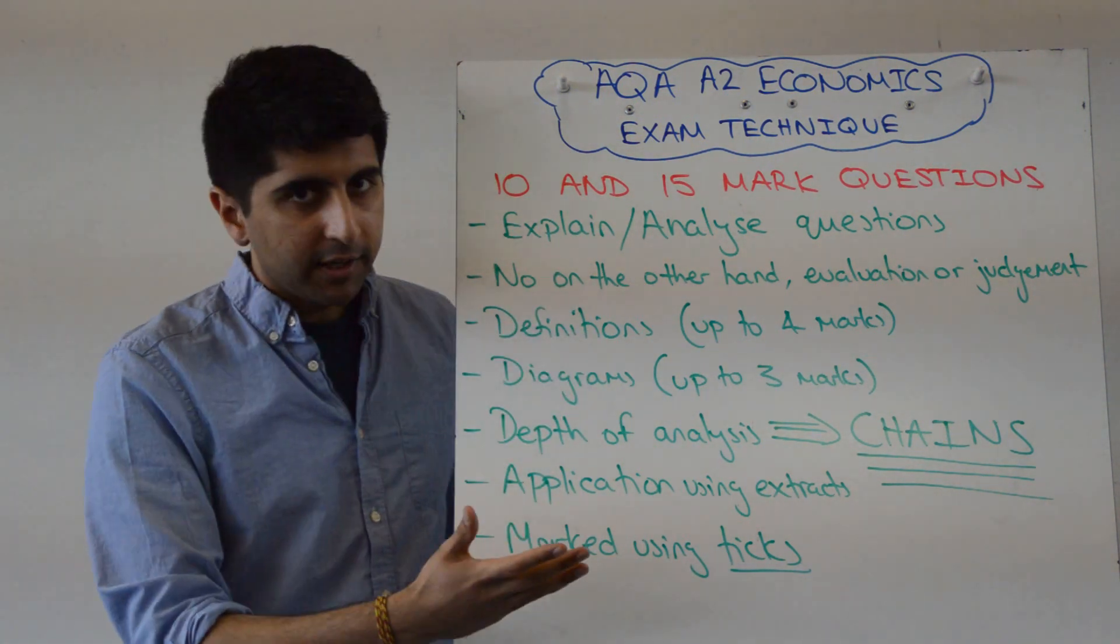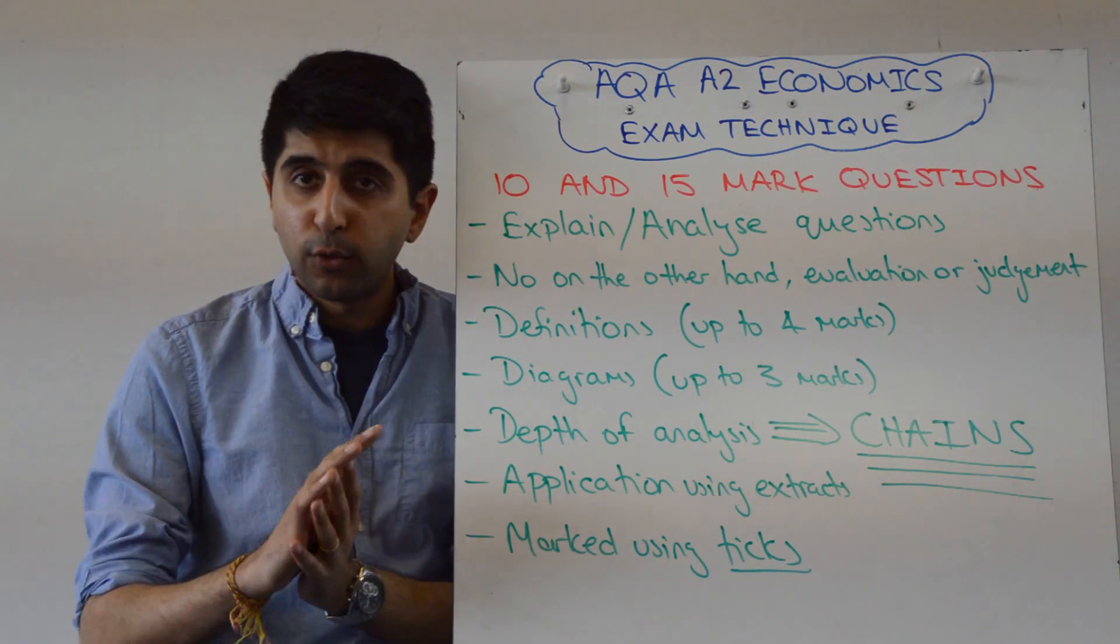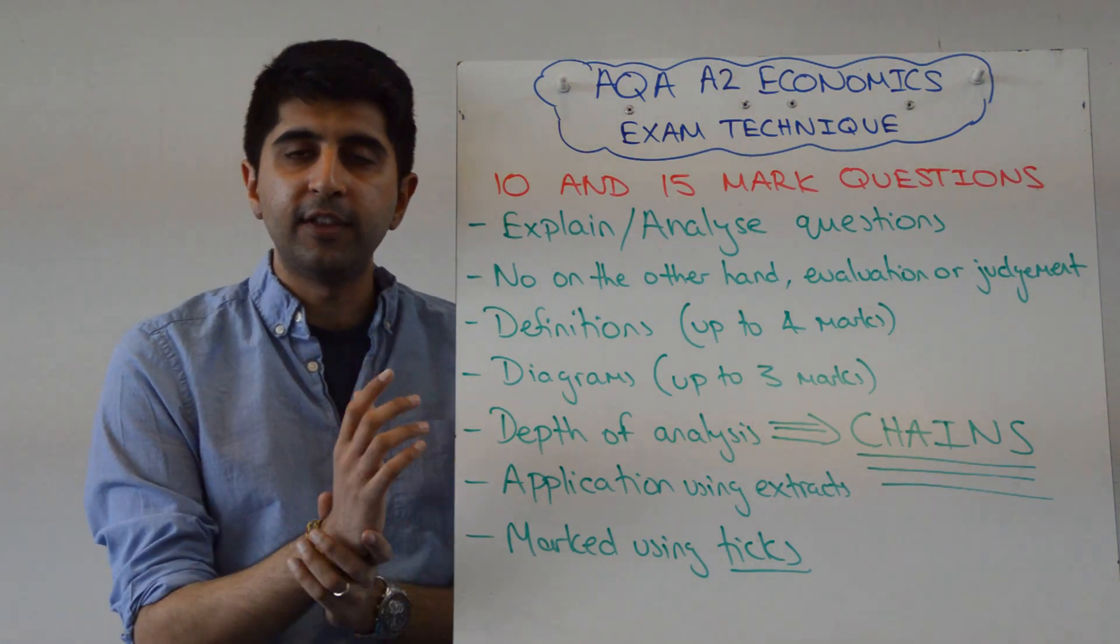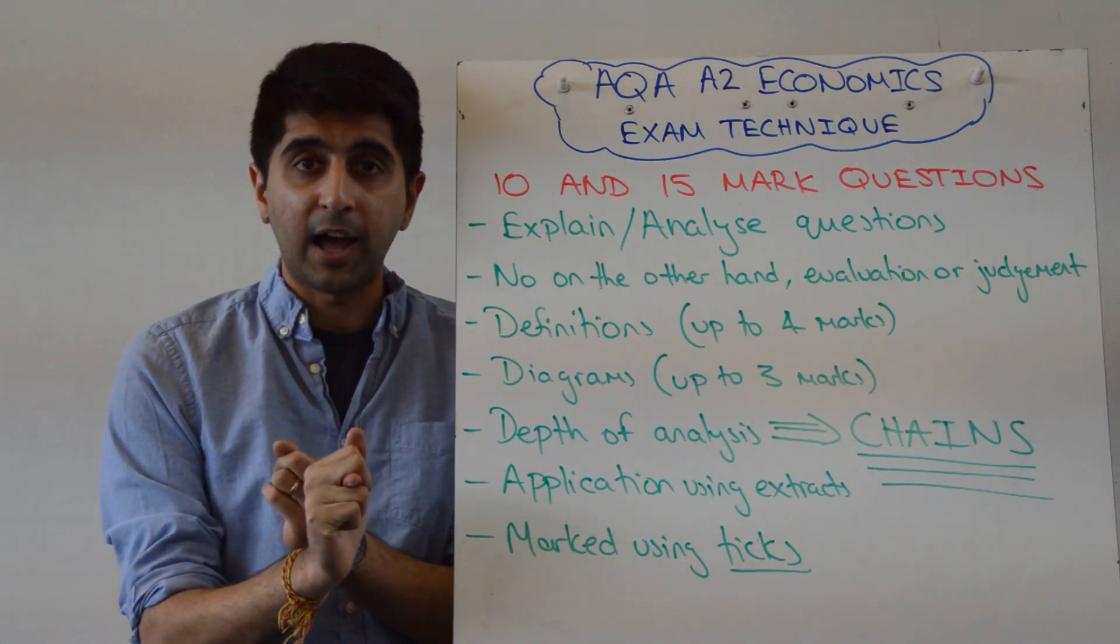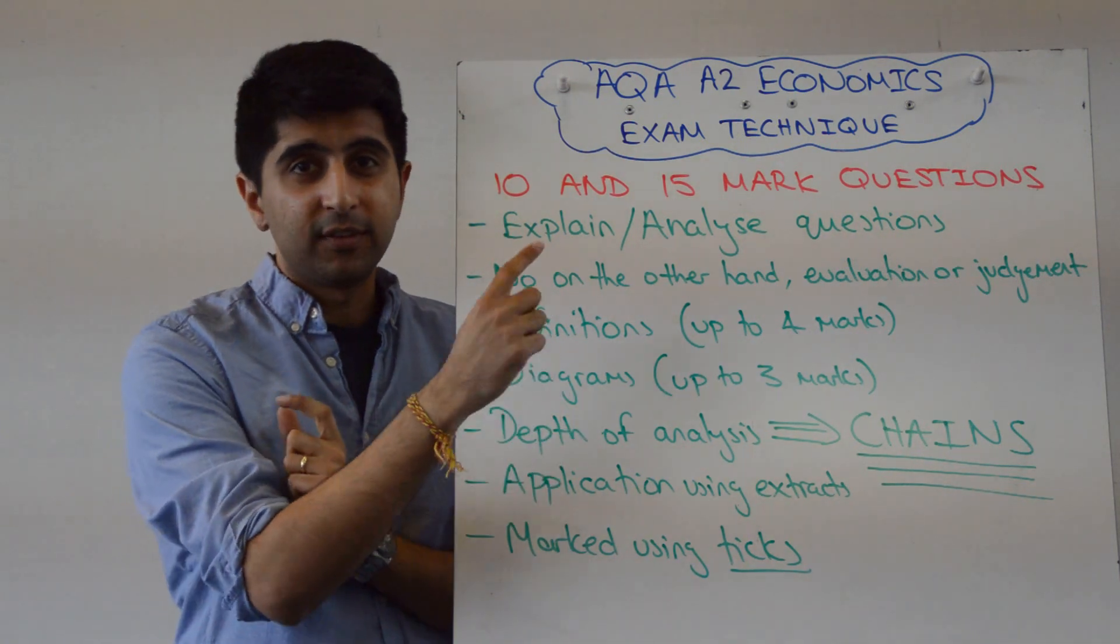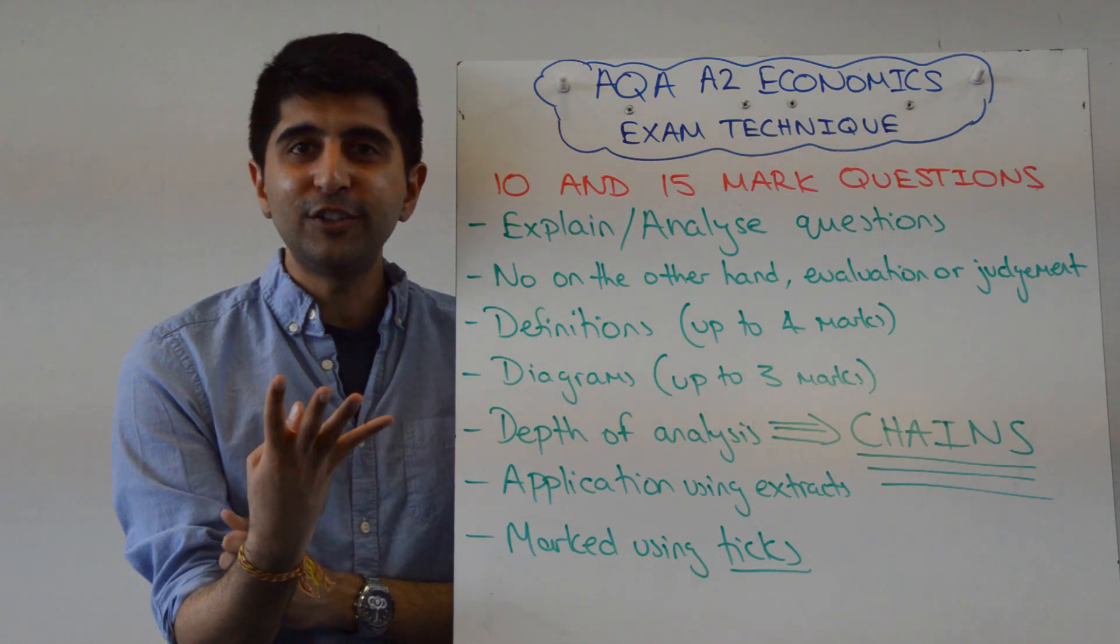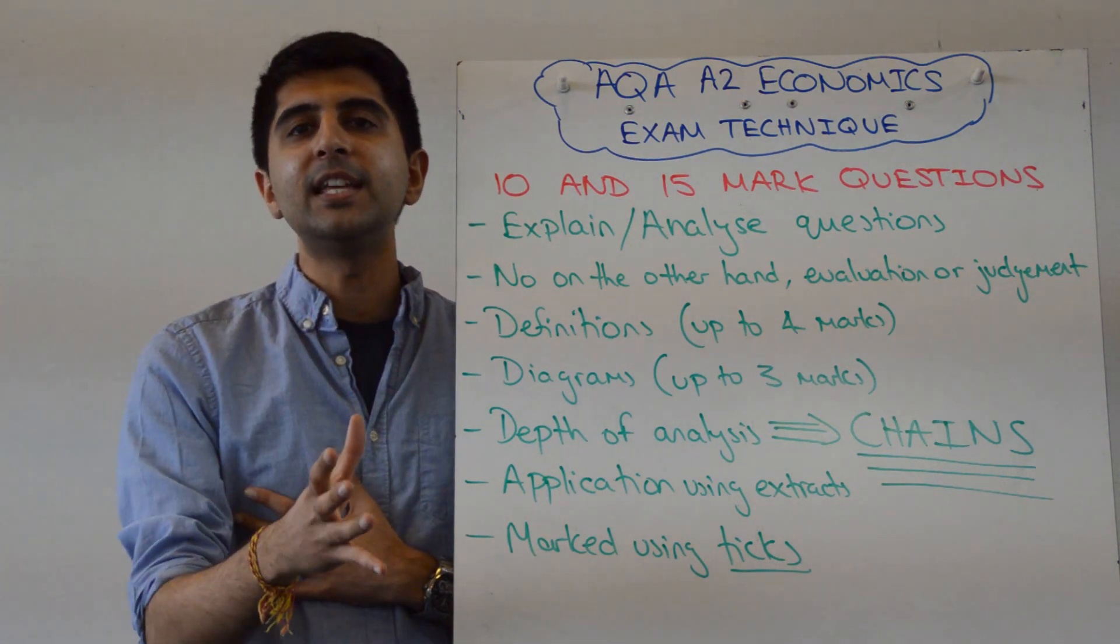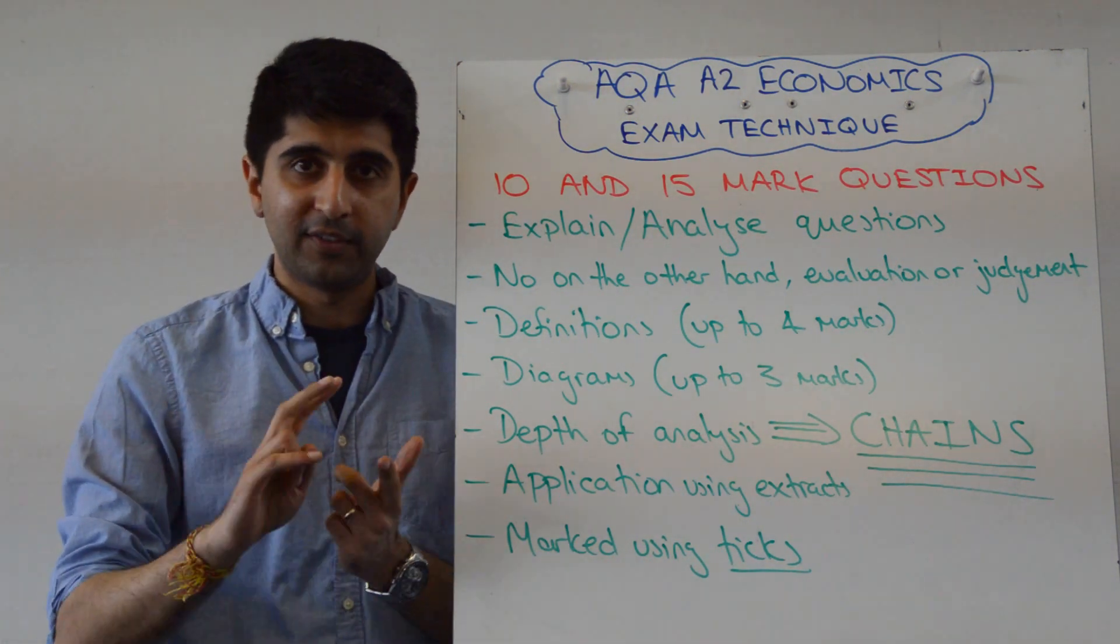Then it comes to structure. What are the key things you need to include for these questions? Well, whether it's a 10 or a 15, remember the same question, so you're structuring it the same way, the same kind of things you need. Always, always, always definitions to start. Now, you can get up to four marks for a definition, whether it's a 10 or a 15. So imagine on a 10 marker, four marks are the definitions. What a joke. How easy is that? So define your key terms. Whatever the key terms are in the question, that's where you focus. Up to four marks available for definitions.